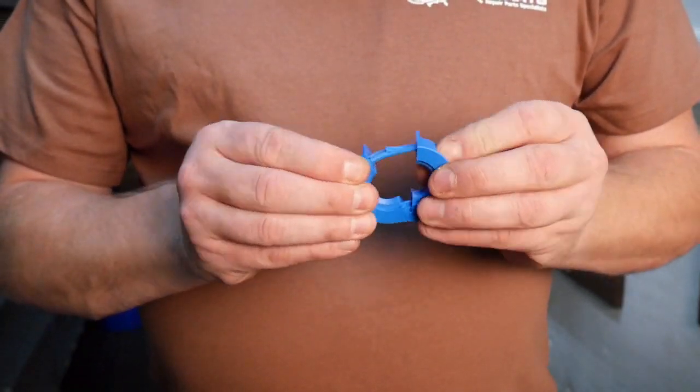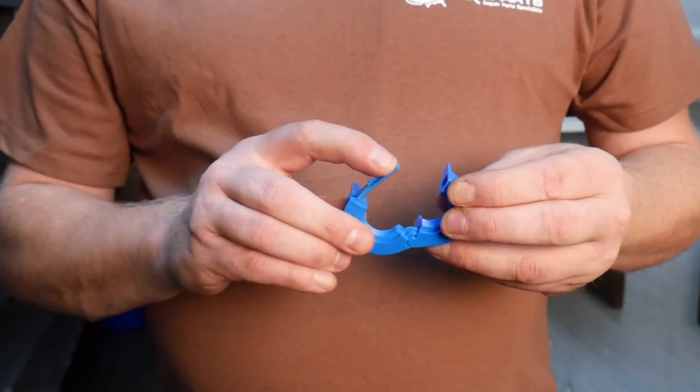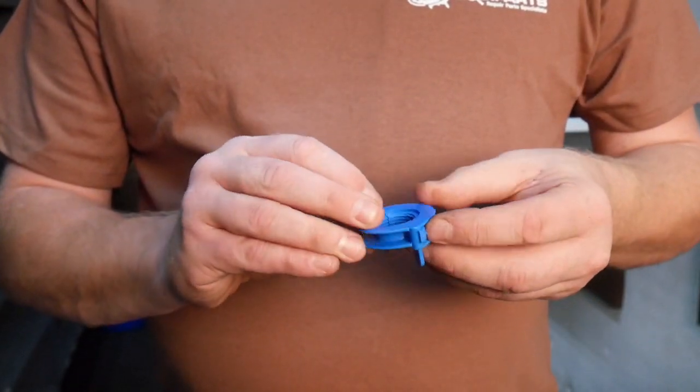As you can see this is hinged so you can wrap around the shaft of the faucet. It opens and closes easily.